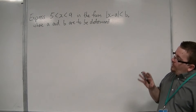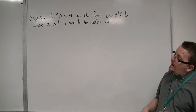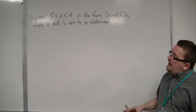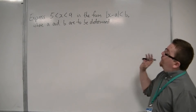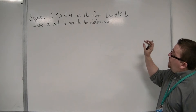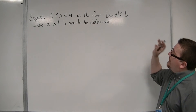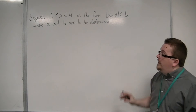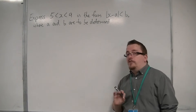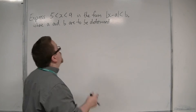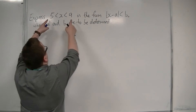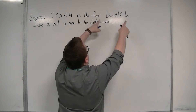What we want to do is express 5 < x < 9 in the form |x - a| < b, where a and b are to be determined. So we want to write this in terms of that form.